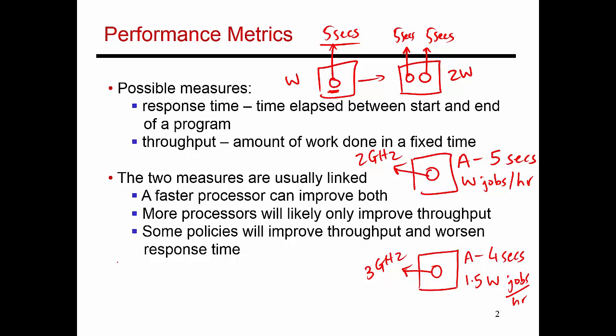Now let's consider a case where I'm adding a policy that improves throughput, but worsens response time. So just as before, let's say that I have a processor, but it has two cores on it. And these processors are sharing a large cache. A cache is basically where you place your most recently accessed data.